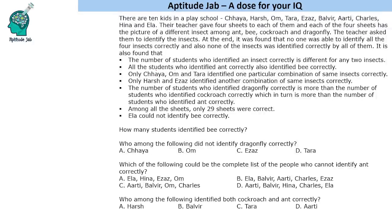Let us start with this. First of all, if we see the number given here, it says that 29 sheets were correct. So there were 40 sheets total — 10 kids and 4 sheets each. So out of 40, 29 are correct.